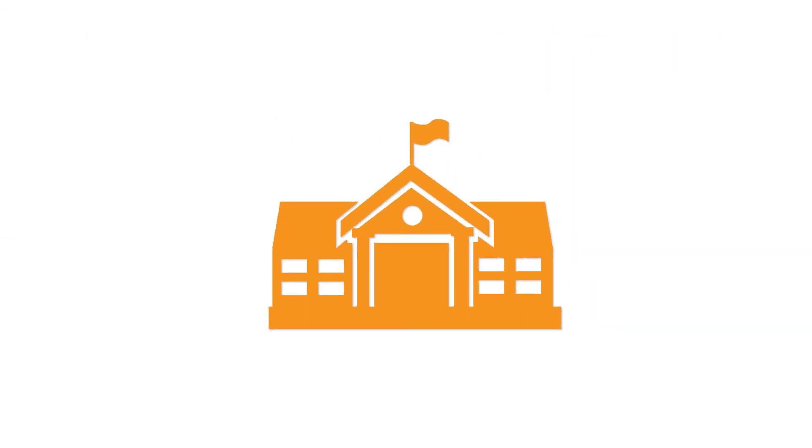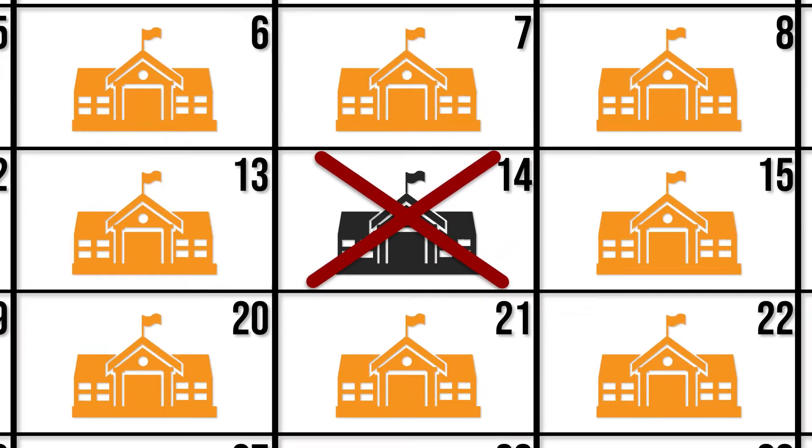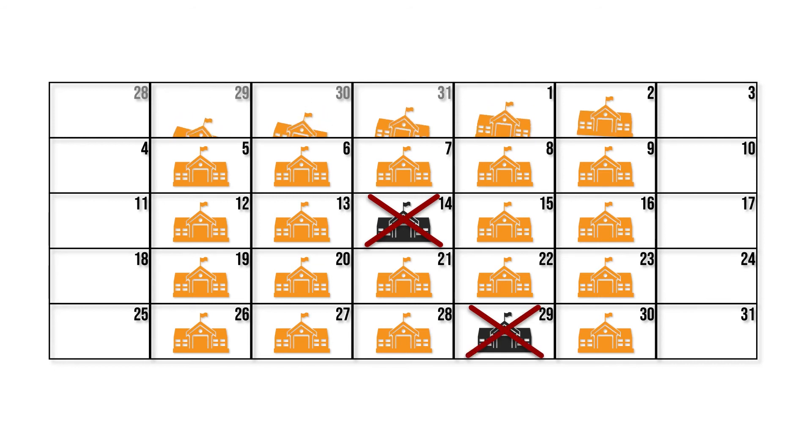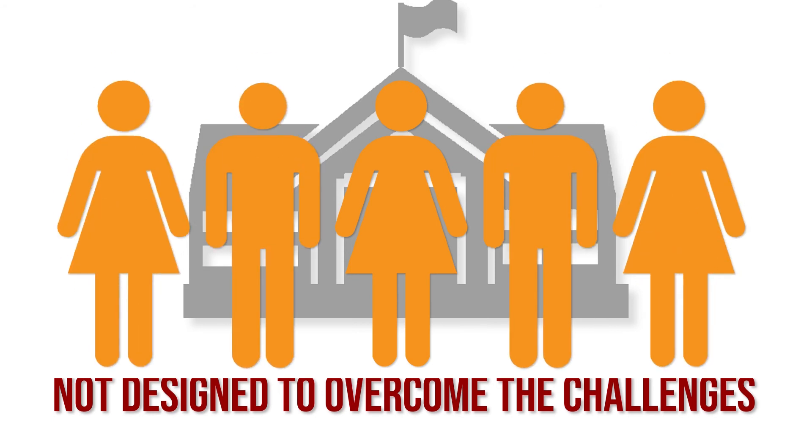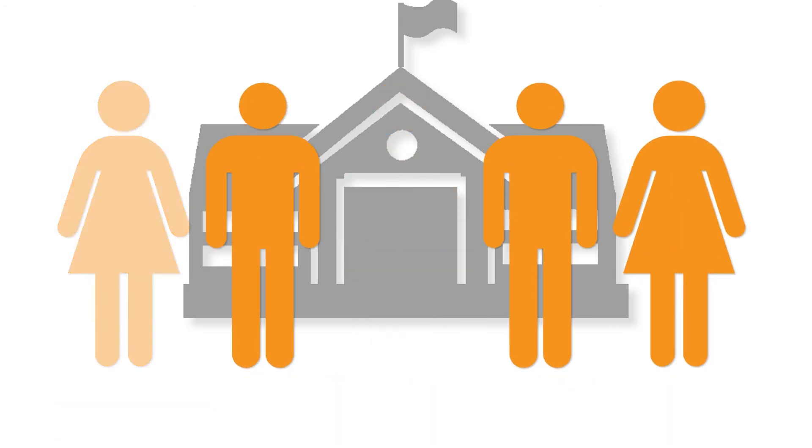For example, when a child misses elementary school just two days per month, they are much less likely to finish high school. The current system is not designed to overcome the challenges that often cause poor attendance and instead may penalise kids unintentionally.